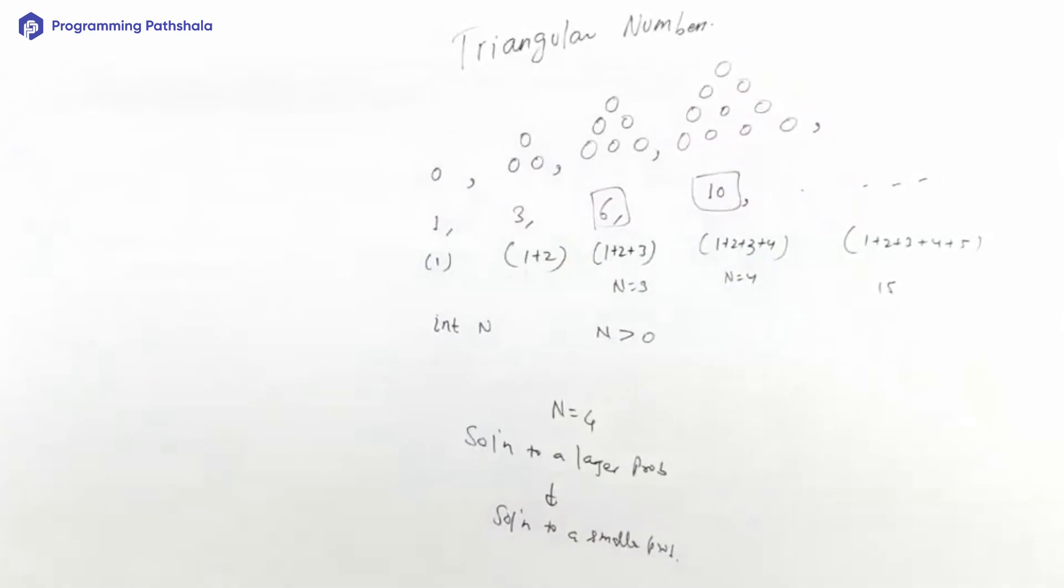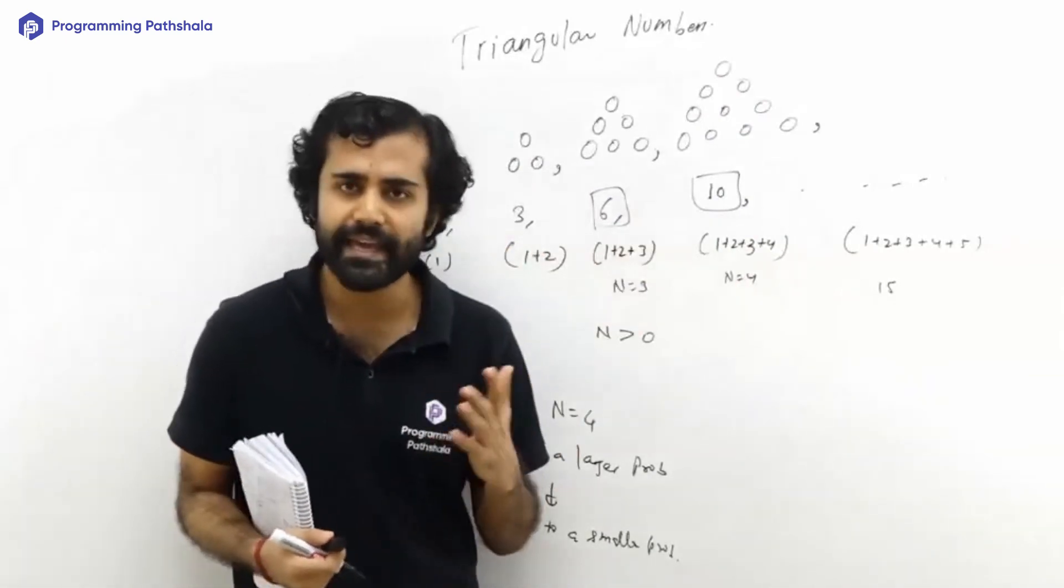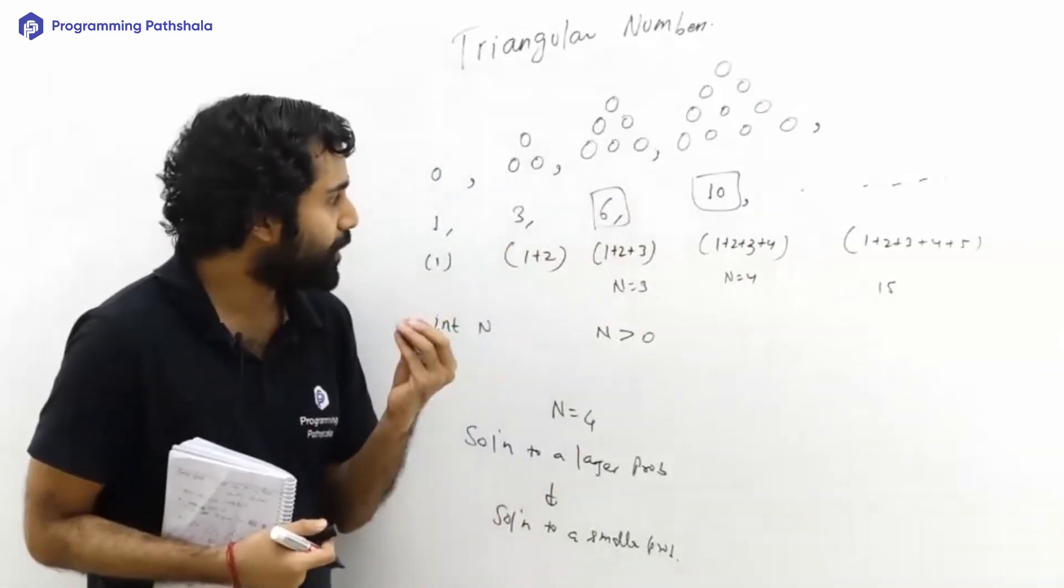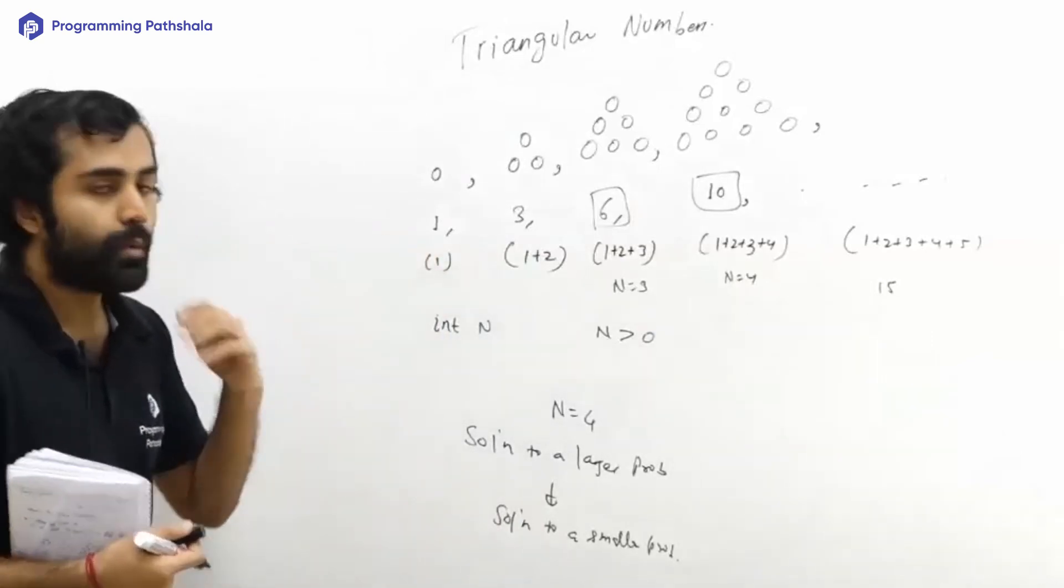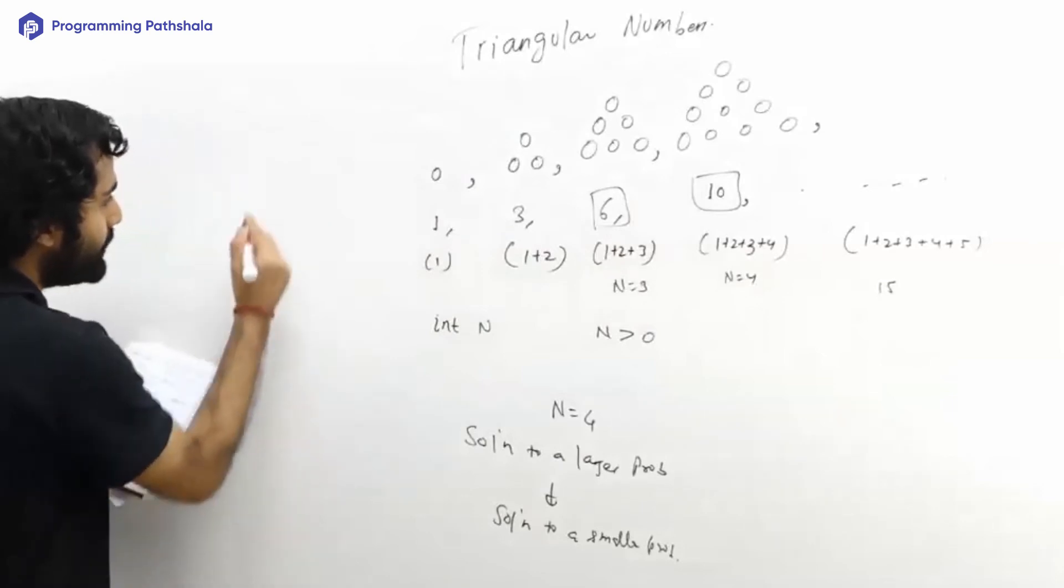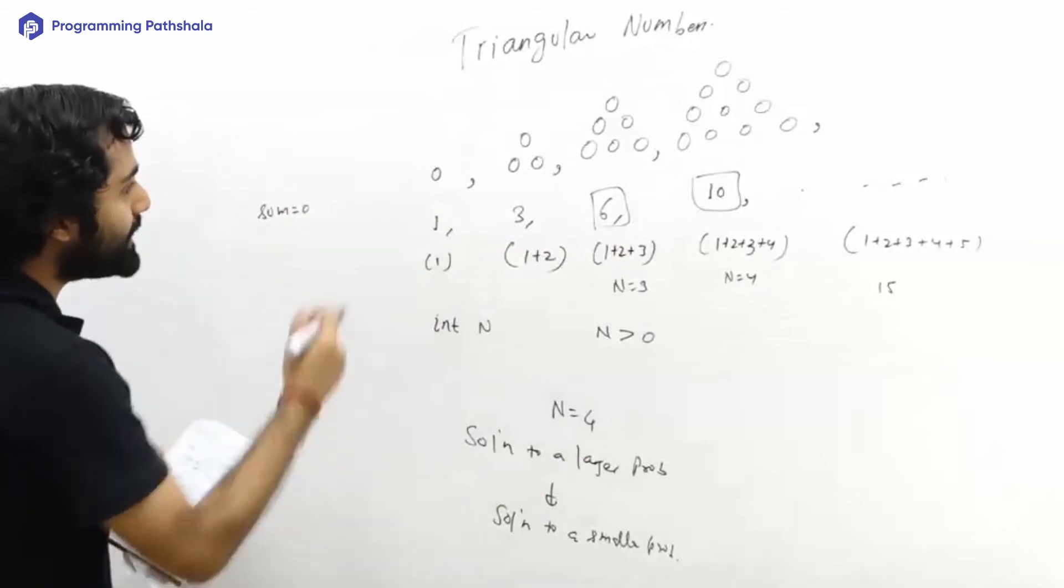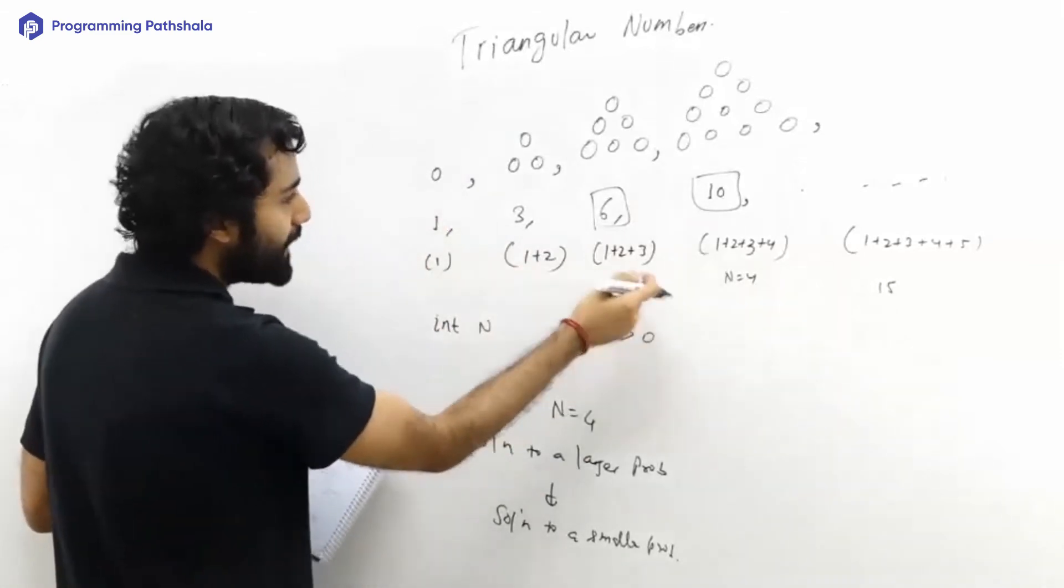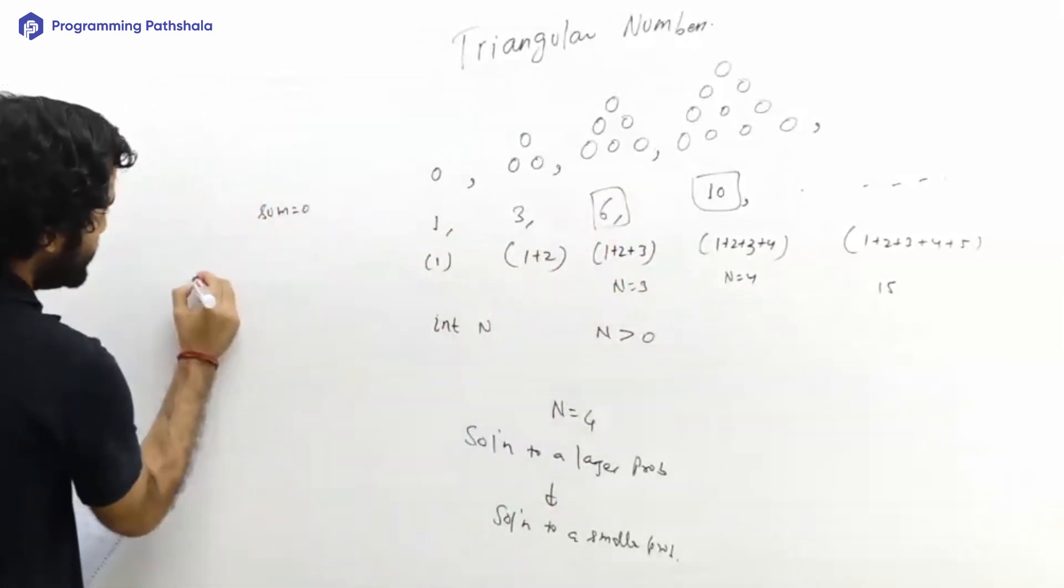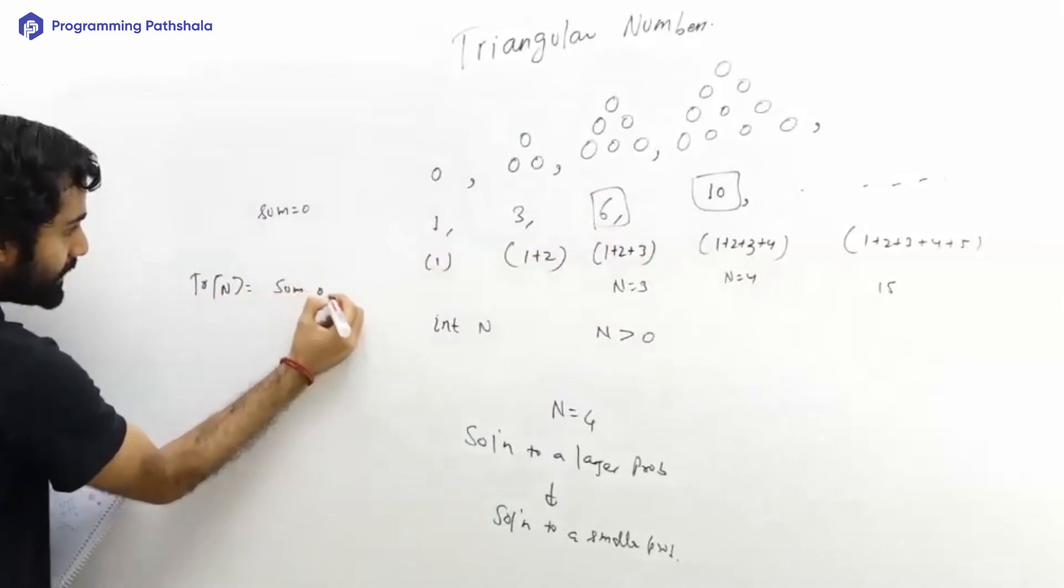If you understand this point, think of the different ways to solve this question. First way can be as simple as this: to create the first triangular number I'll add one to my sum. To create my second triangular number I'll add one plus two. To create third triangular number I'll do one plus two plus three. So I can say that the nth triangular number is nothing but sum of first n natural numbers.